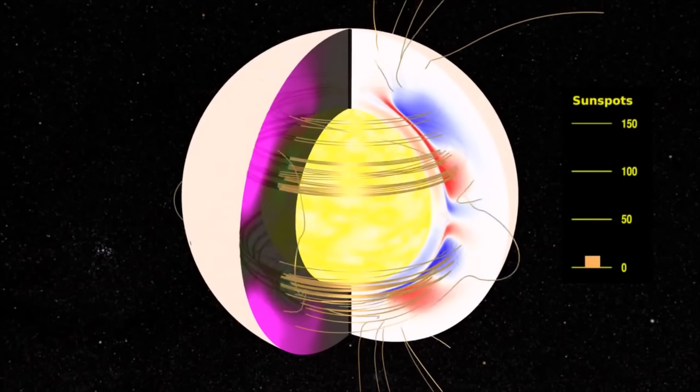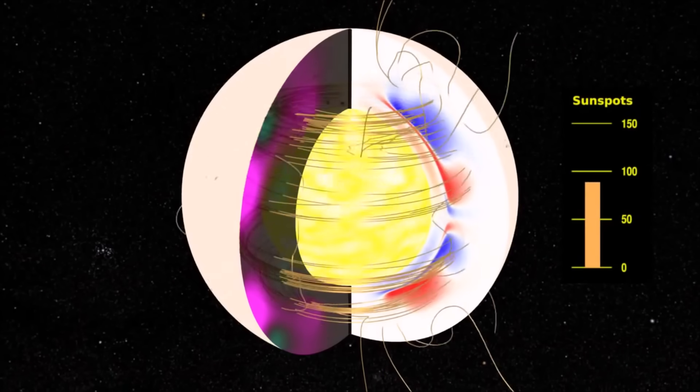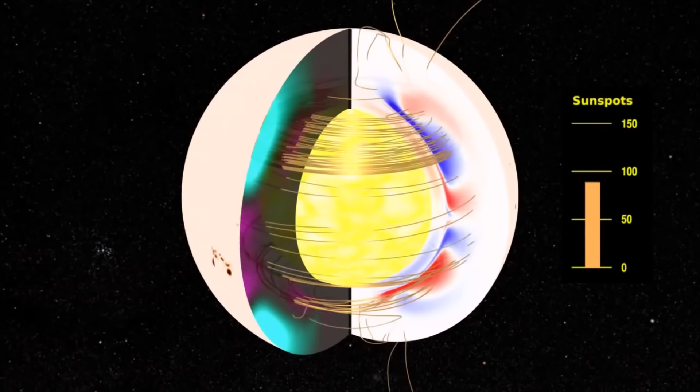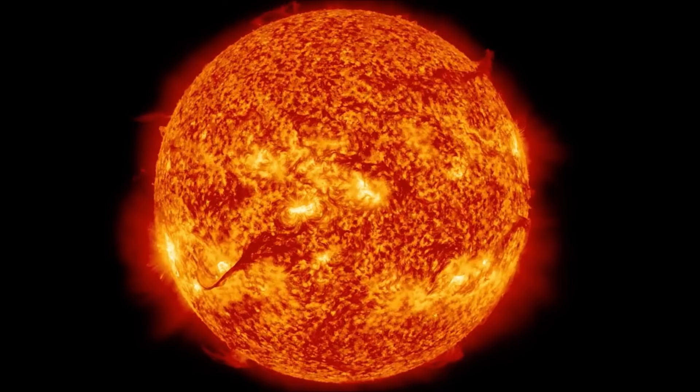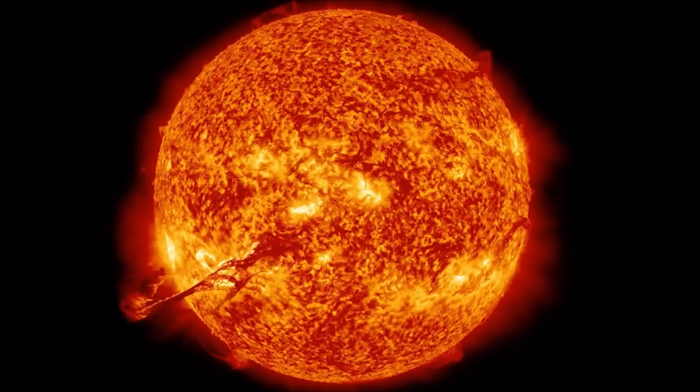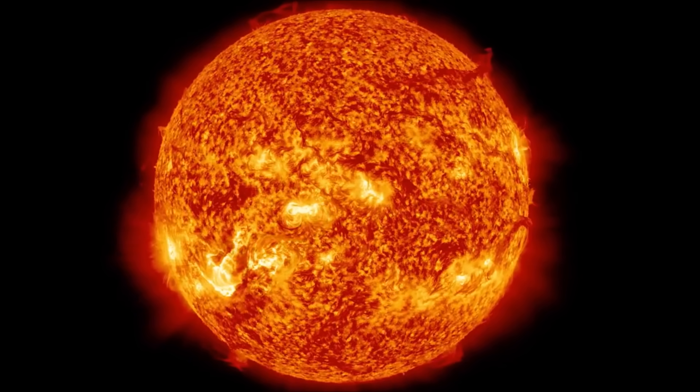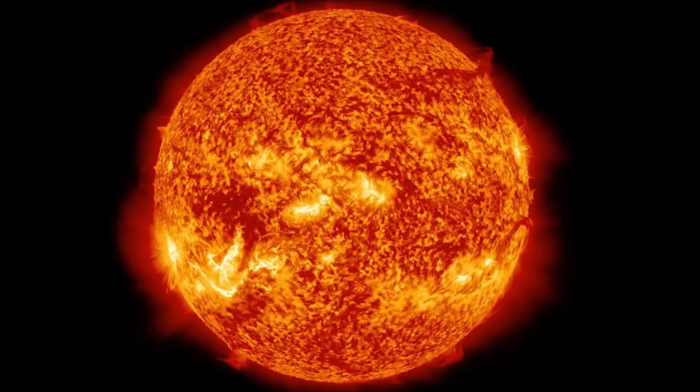The sun's core is about 27 million degrees Fahrenheit, or 15 million degrees Celsius. By the time heat from the sun's core reaches its surface, temperatures have dropped considerably. The surface of the sun is only about 10,000 degrees Fahrenheit, or 5,500 degrees Celsius.